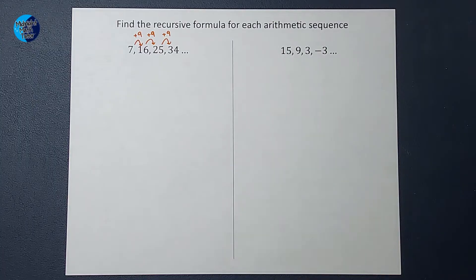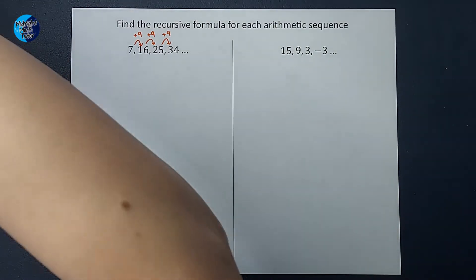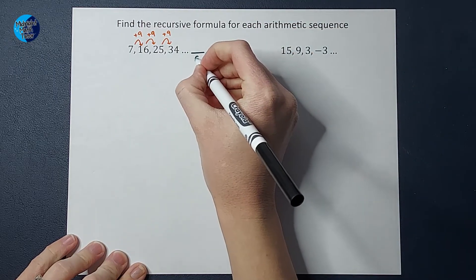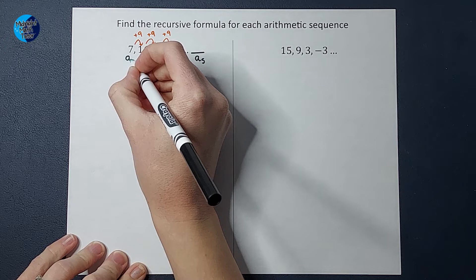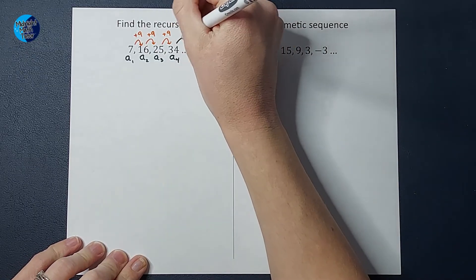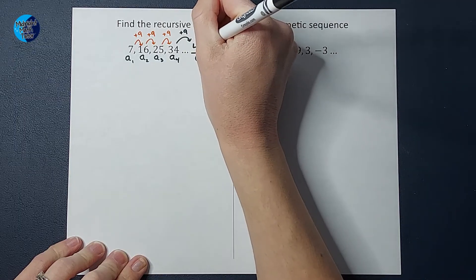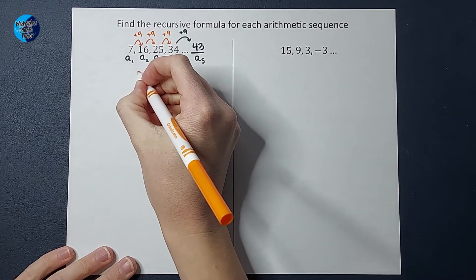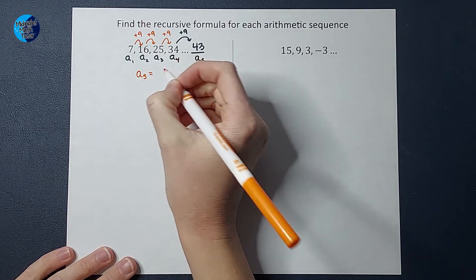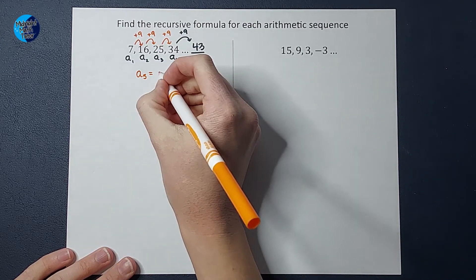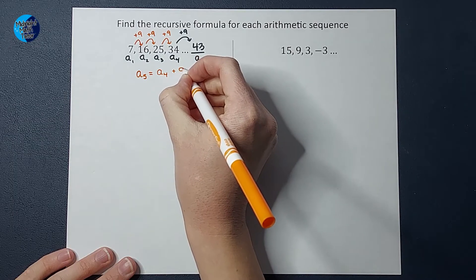Let's pretend we're looking for this fifth term. To find this would be A sub five, because this is A sub one, A sub two, three, and four. If I wanted to find that, I'd add nine to 34 and get 43. But pretend I don't know that and I want to find it with a formula. What did I do to find that? I'm asking, what is A sub five? A sub five equals I took A sub four and added nine.